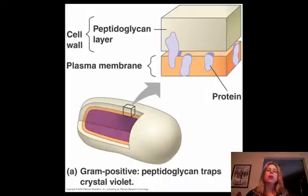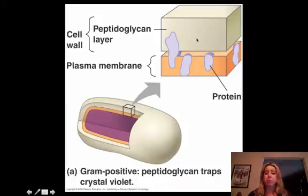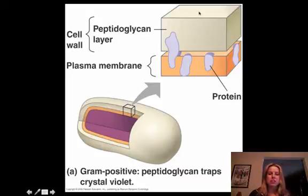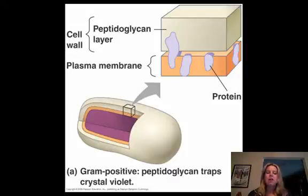Here's an example of gram positive bacteria. That off-white color is the cell wall, and in cross-section you can see it's very thick but very simple. The reason it's called gram positive is because of a gram staining process — you use a dye called crystal violet, which is purple. Since this is such a spongy, thick, and simple cell wall, it just absorbs that dye, which is why we call it gram positive.